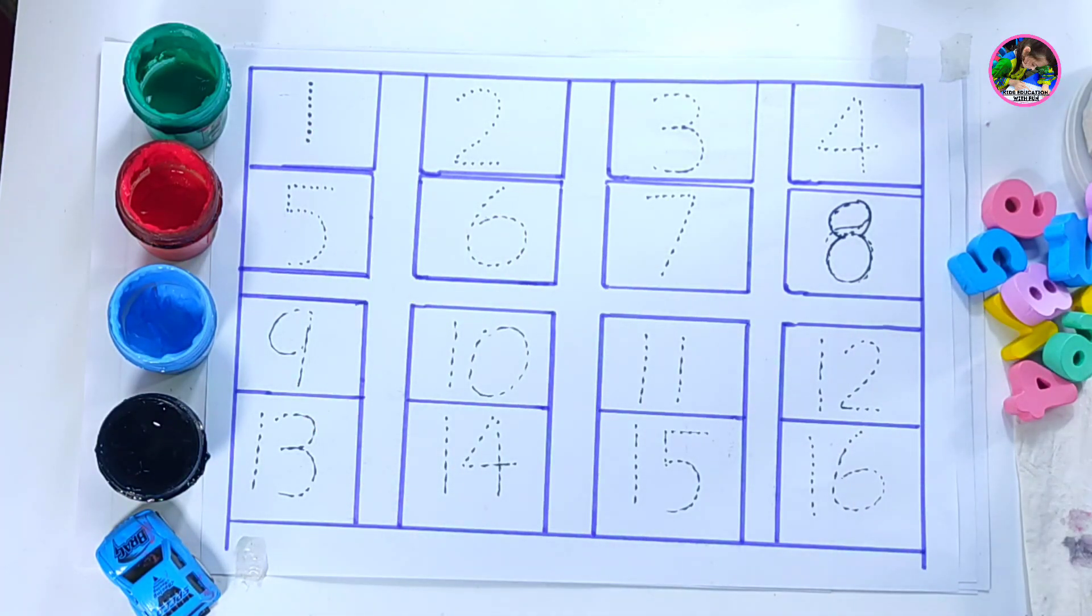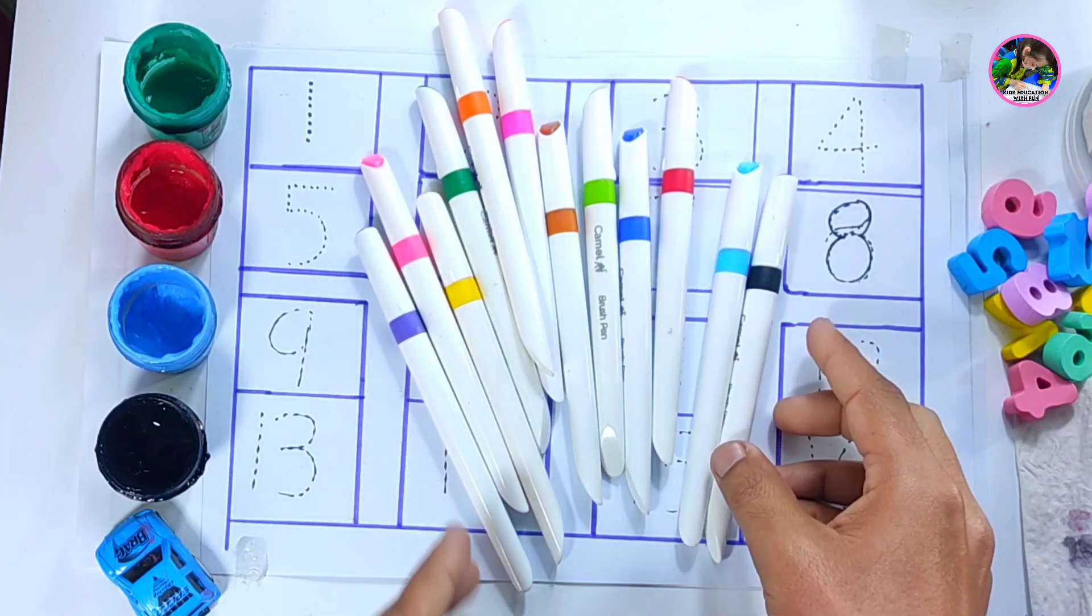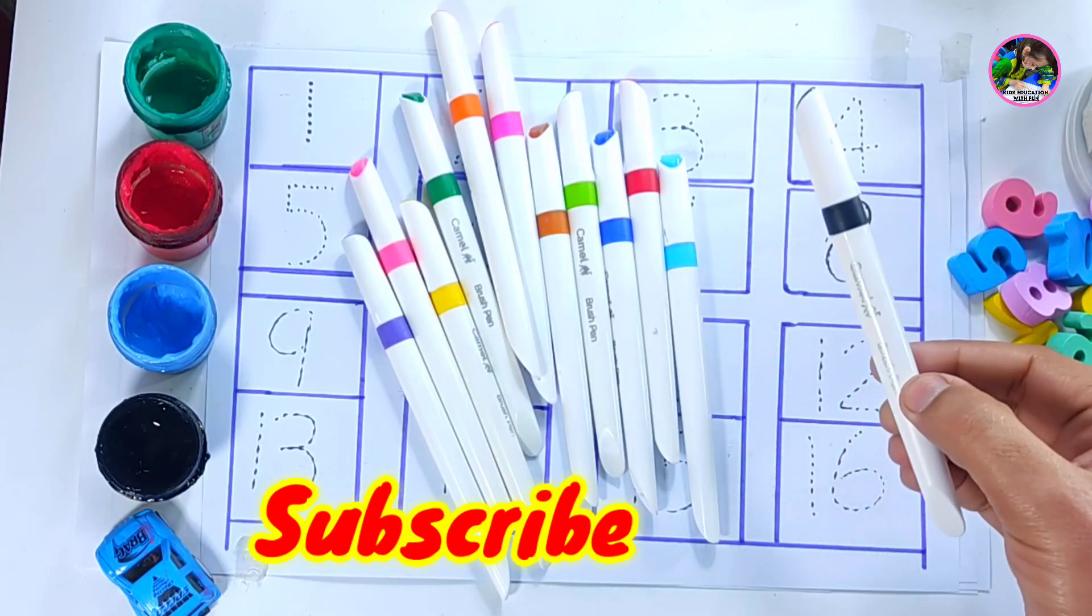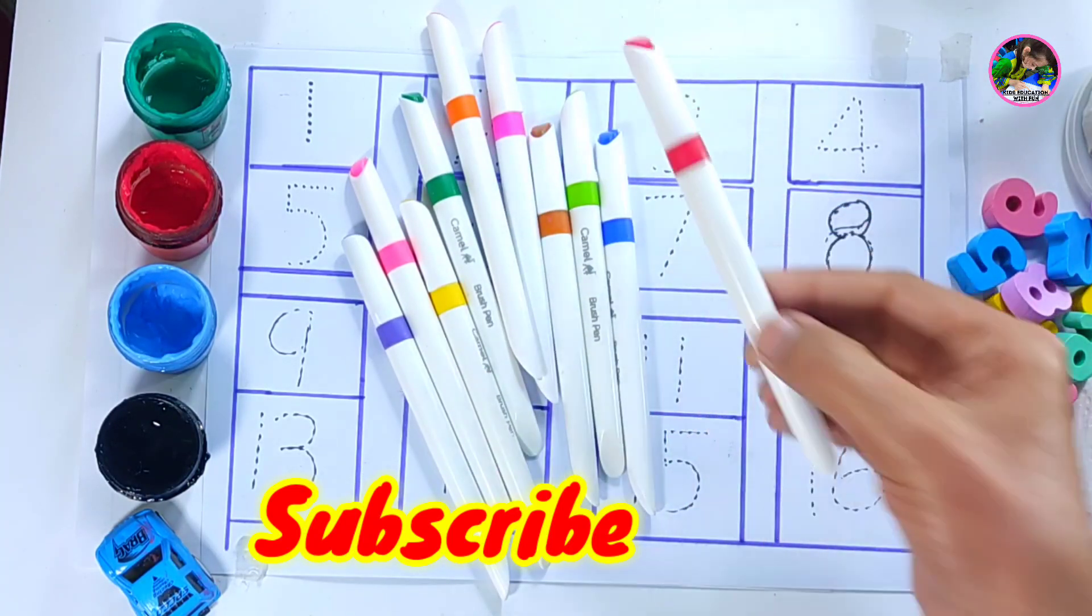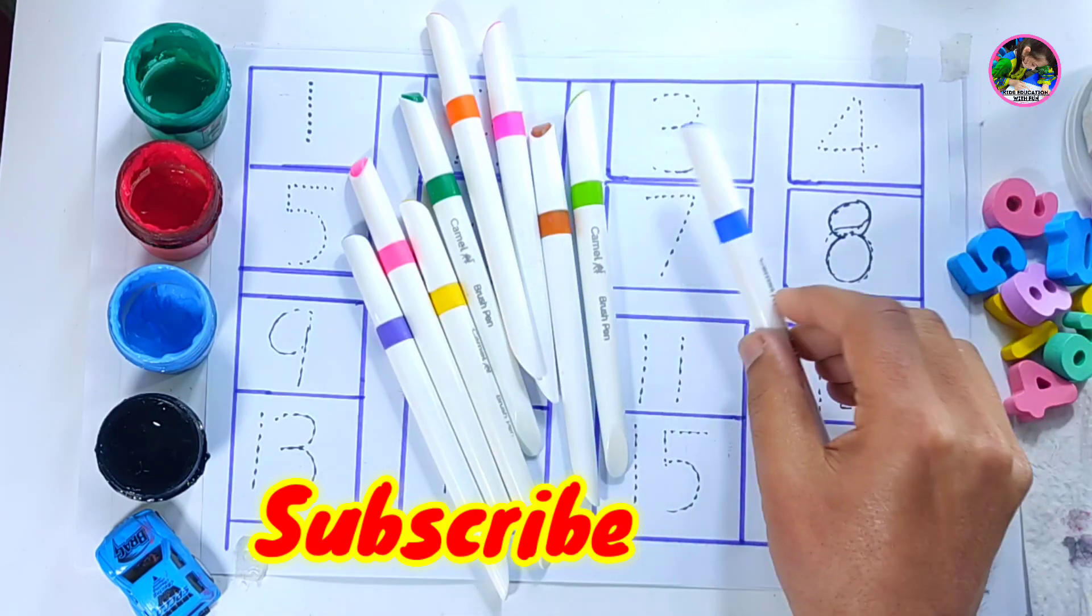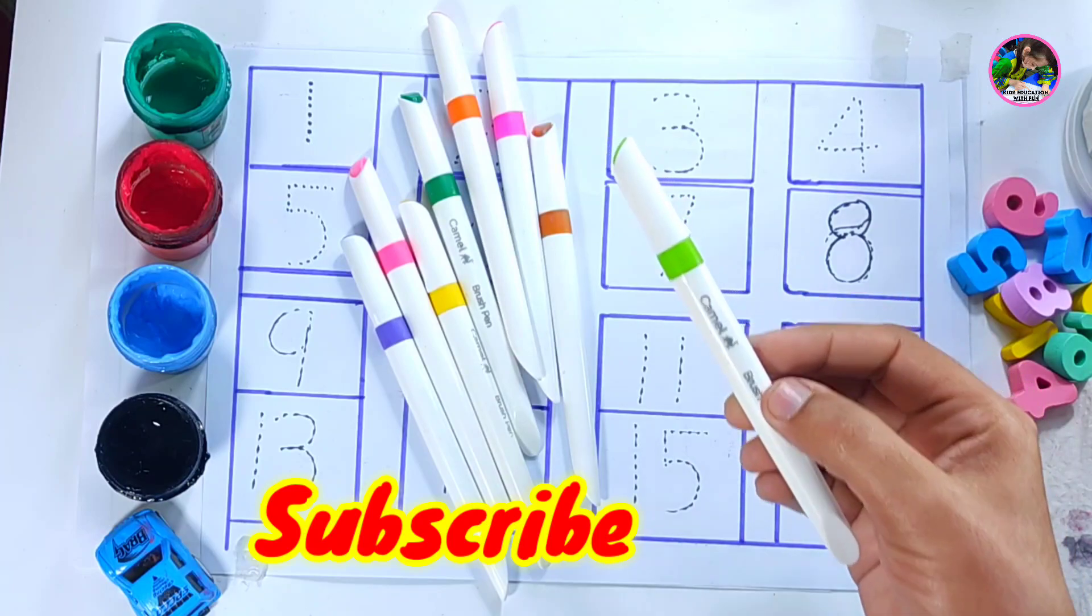Let's learn some colors. These are our colors. Yeh hain humari colors. Black color. Sky blue color. Red color. Dark blue color.